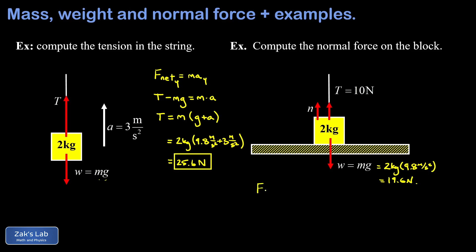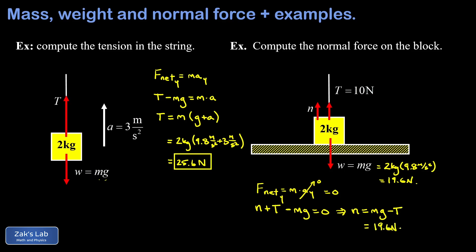We look at F net in the y direction, equal to mass times y acceleration. Since the object is stationary, the y acceleration is zero. Choosing upward as positive: normal force plus tension minus mg equals zero. Solving for the normal force, we get N equals mg minus T. That's 19.6 newtons minus 10 newtons, giving a normal force of 9.6 newtons — exactly what it needs to be to keep the mass constrained to the surface.